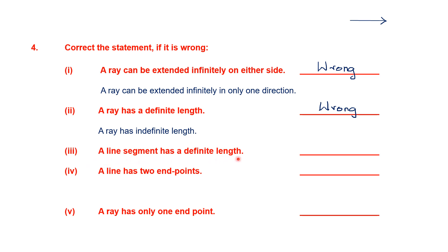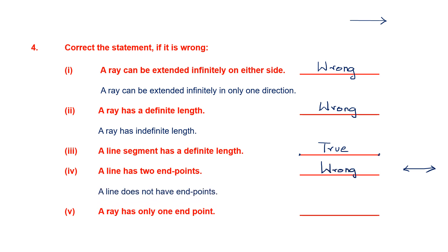Third statement: a line segment has a definite length — that's true. A line segment has a beginning point and an end point, so there is a definite length. Only a line segment has a definite length. Next: a line has two end points — that's wrong. A line has arrowheads at both ends, meaning it goes continuously on both sides and doesn't have end points. The correct statement is: a line does not have end points. Fifth: a ray has only one end point — this statement is correct.